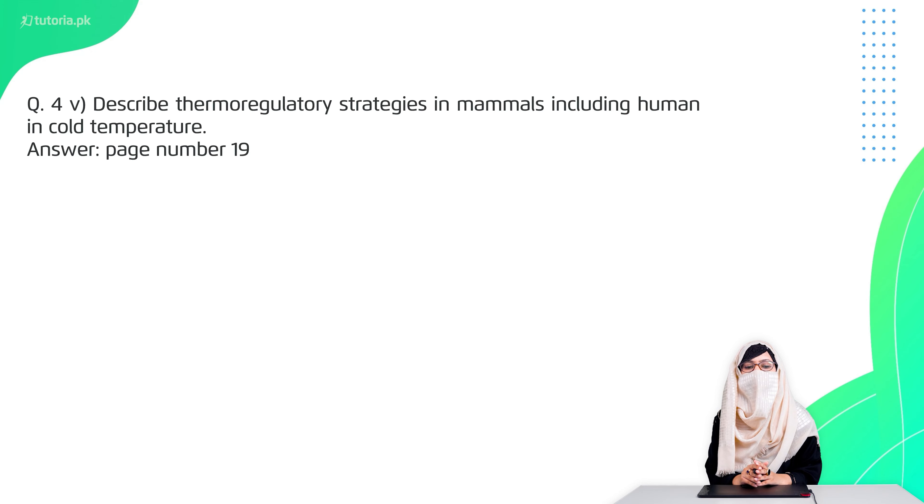The fifth question is describe the thermoregulatory strategies in mammals including the human in cold temperature. Now your book's chapter is called heat and cold temperatures. You have to tell the cold temperatures. Then if you will explain the flow chart through it, it will give you more marks. And this answer is on page number 19.